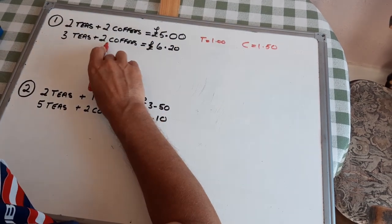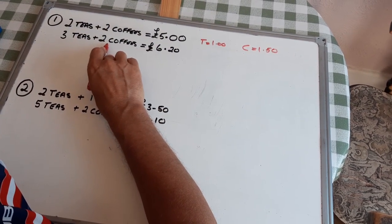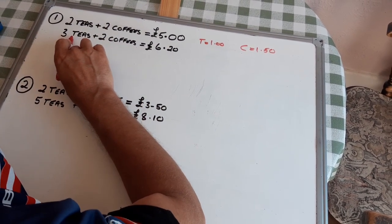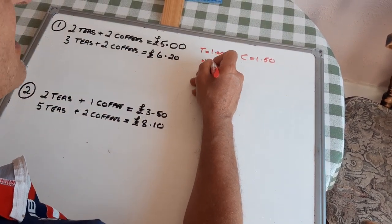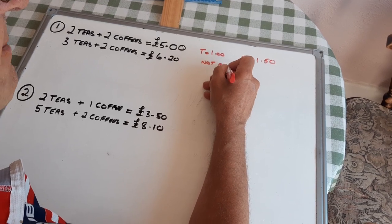Then, let's check that. Two coffees are £3. Three teas are £3. £6, not quite, but close.